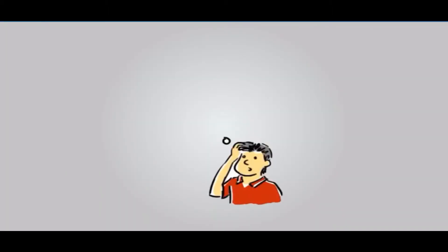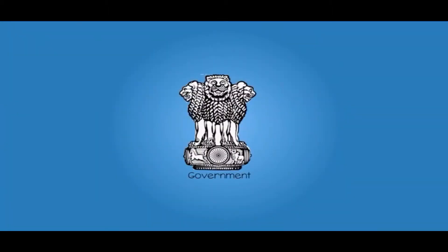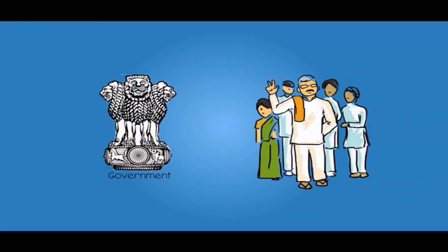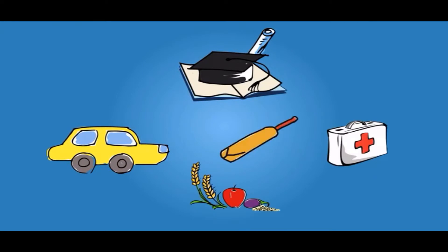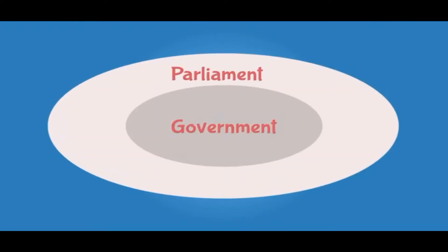But how is the Parliament related to our life? The government and its ministry make decisions on our behalf about various things which are a part of our life, like transport, our education, health care, food, and even sports. But the Parliament is bigger and the government is a part of it.